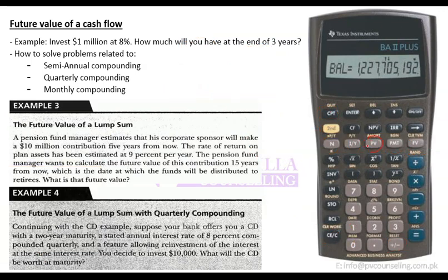Similarly, if you have to calculate present value, put in all other numbers and compute PV. If you have to calculate rate, put in all other numbers and compute rate. From these 4 variables, if you have 3 you can find the 4th using your calculator. Another thing to note: if you want to check what is stored in N, you cannot just press N because whatever is on screen will get saved into N. Instead, use the RCL (recall) button — press RCL then N and it will show you what is stored in N. Press RCL then I/Y and it shows what is stored in I/Y.